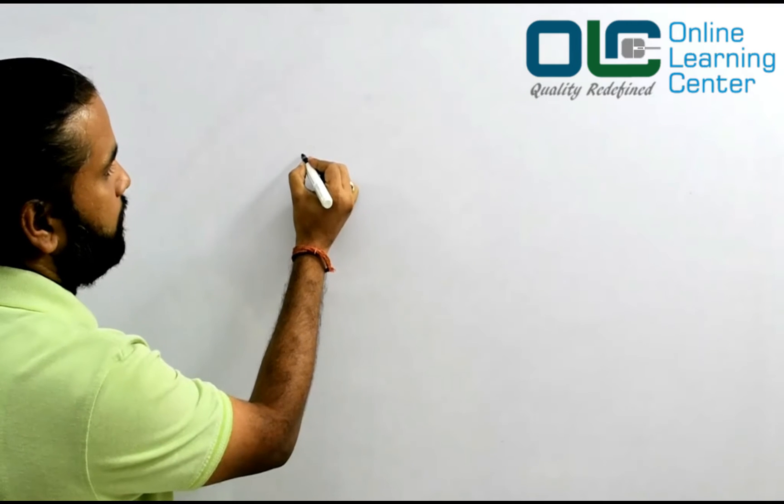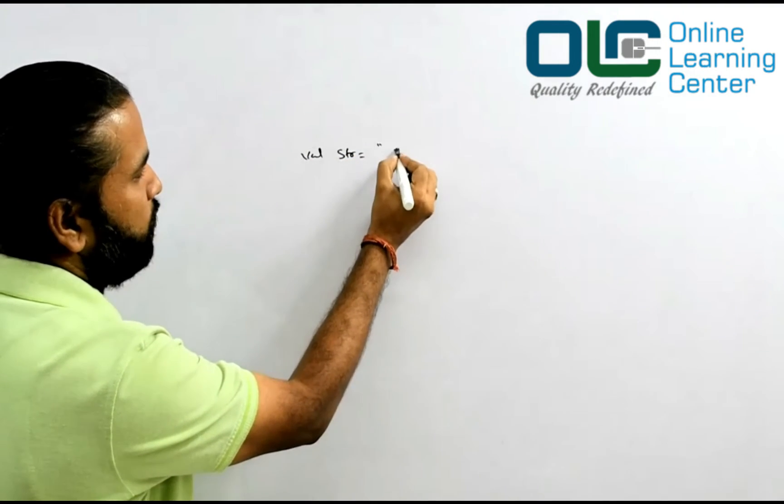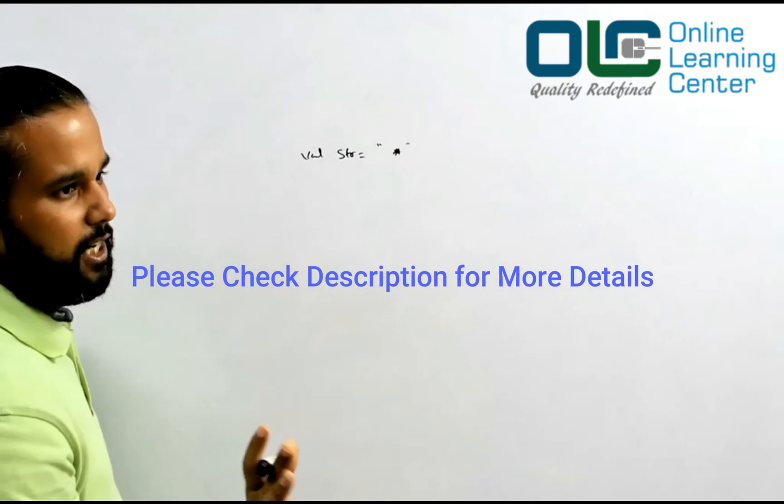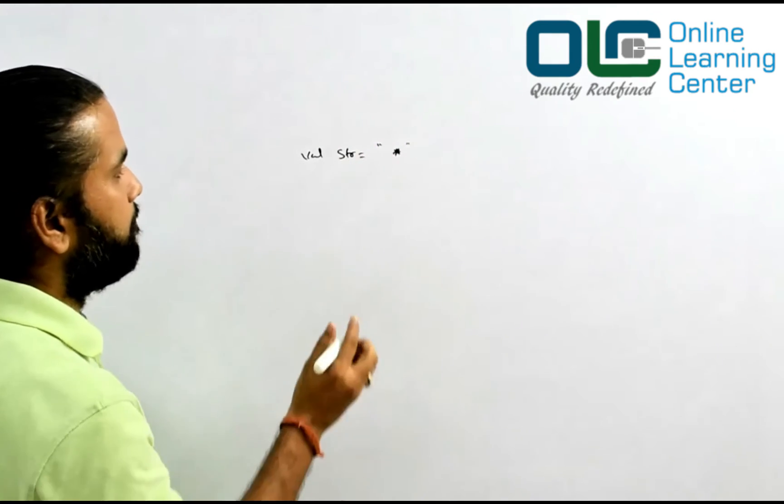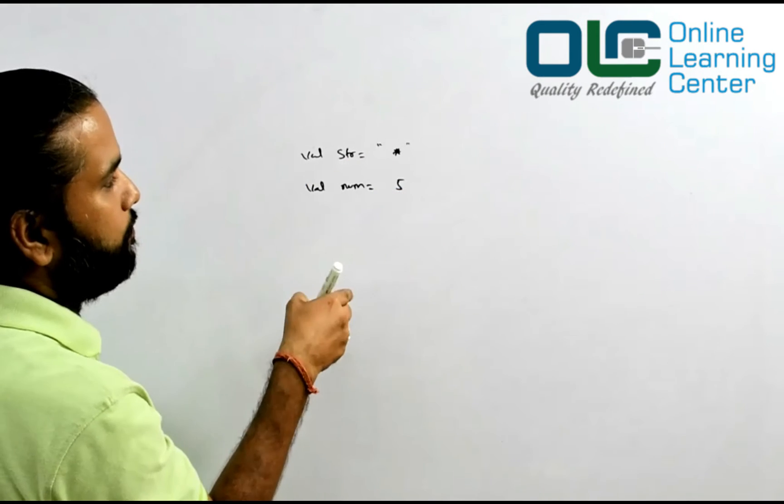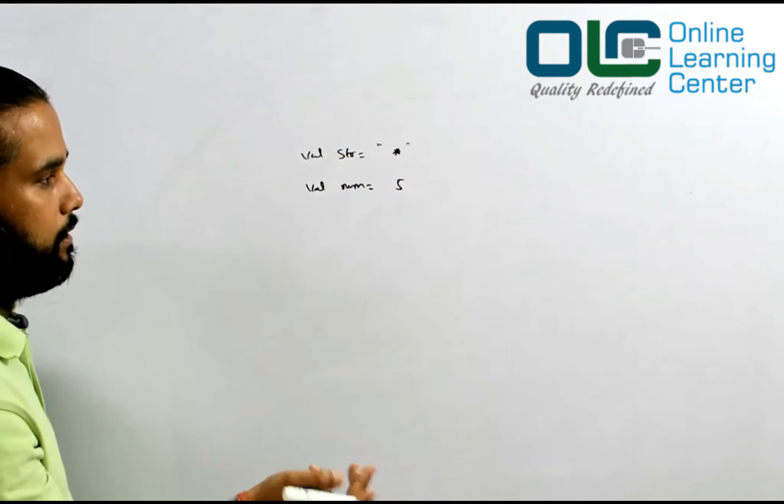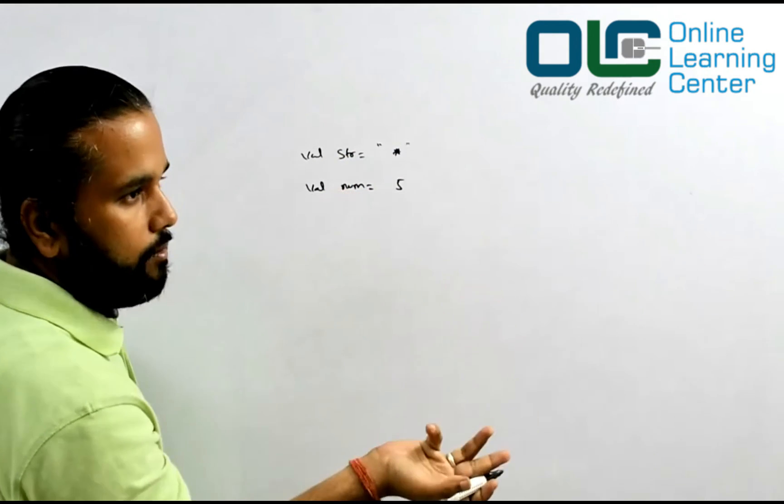One would be a string, str, that holds only one character - any character, let's say a star. And a number, num equals 5. You're given two inputs: str and num. Str contains any character like star, and num contains any number like 5.